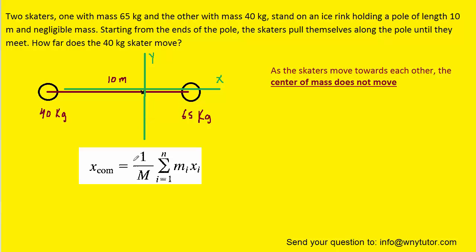And then once we do that, we can use the following equation to help us solve for this unknown distance. Remember that we're looking for the distance from the center of mass to the 40 kilogram skater, because that is how far that skater will travel. So we can mark that distance x. And then the distance from the center of mass to the 65 kilogram skater would be 10 minus x, since the entire length between them is 10 meters.